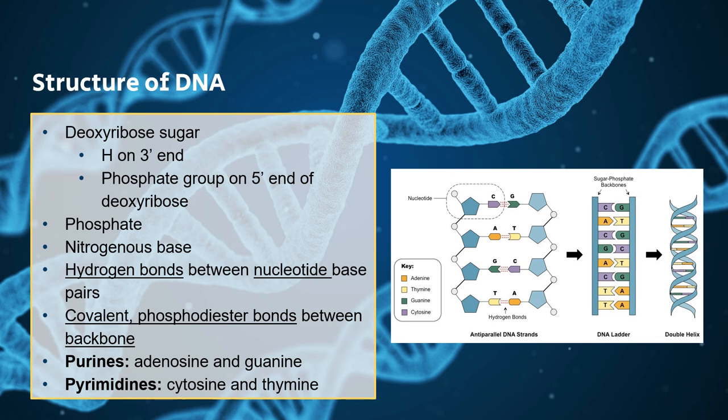We just call that anti-parallel. So on your deoxyribose, the hydrogen group is going to be on your 3' end, and then the phosphate group will be on your 5' end. And how I remember this: hydrogen has a lower atomic mass, so it'll go with the lower number — the 3. And then just remember the phosphate group goes with the opposite.